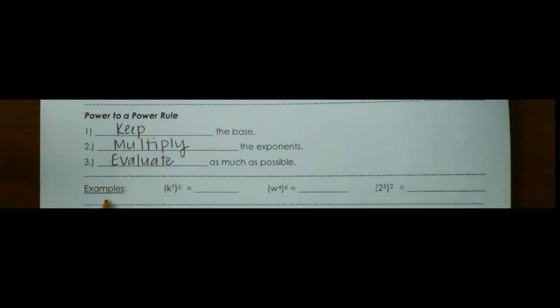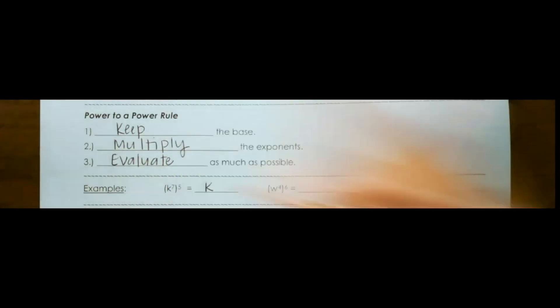So let's look at some examples. This is k to the 7th and then to the 5th power. So I keep the base and just multiply my exponents. 7 times 5 is 35.